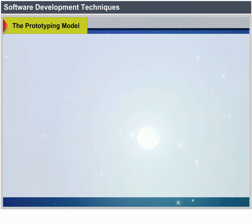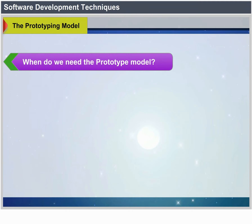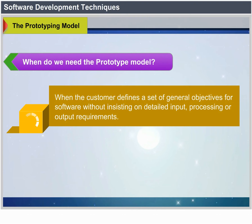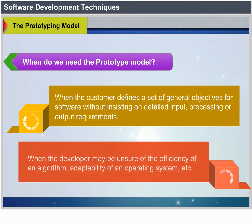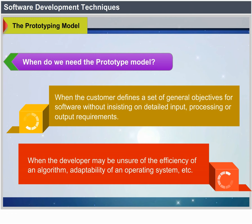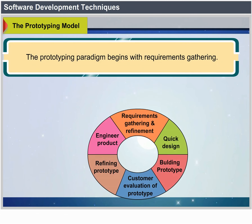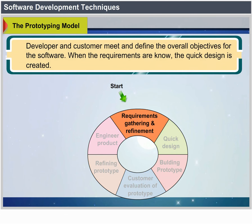The Prototyping Model. When do we need the prototype model? When the customer defines general objectives but does not identify detailed input, processing or output requirements, or when the developer may be unsure of the efficiency of an algorithm or adaptability of an operating system. The prototyping paradigm begins with requirements gathering, where the developer and customer meet and define overall objectives. When requirements are known, a quick design is created.